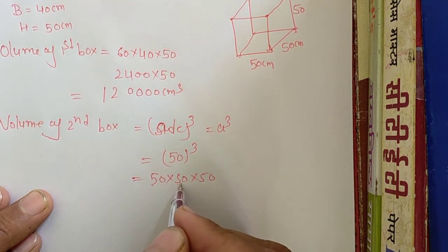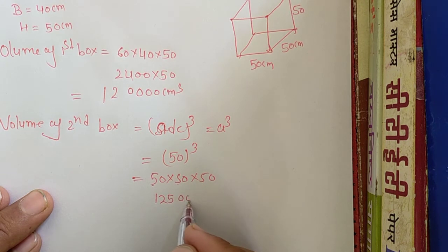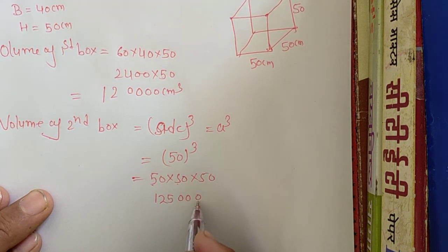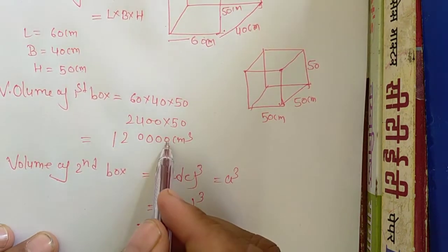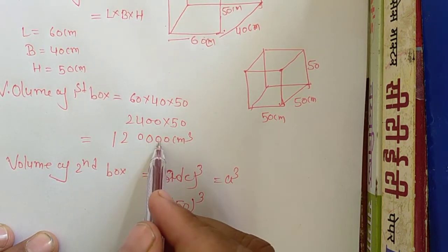5 times 5 is 25, and 25 times 5 is 125, 100. Once, tens, hundreds, thousands, ten thousands, lakhs: 1 lakh 25 thousand. This means 1 lakh 25 thousand.